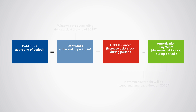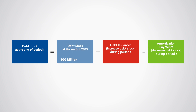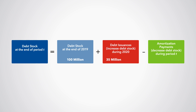The Ministry gives you the following information. The debt stock outstanding at the end of 2019 was 100 million Macroland pesos. Throughout 2020, Macroland's government will issue 35 million Macroland pesos of new debt, and the government will amortize debt for 20 million Macroland pesos.